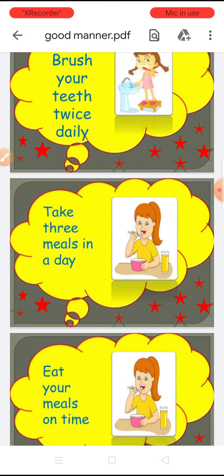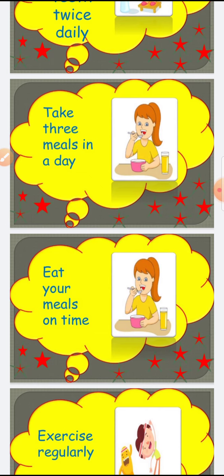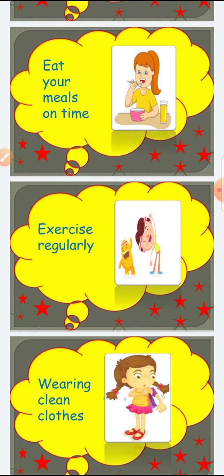We should always eat healthy food and a balanced diet. Eat your meals on time — breakfast, lunch, and dinner should always be taken at the proper time. Exercise regularly — जो व्यायाम करते हैं, रोज करना चाहिए — because exercise is an important way to keep our body healthy.